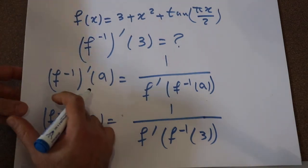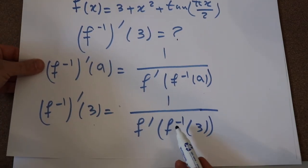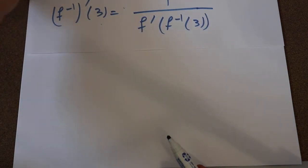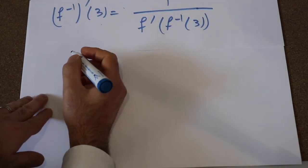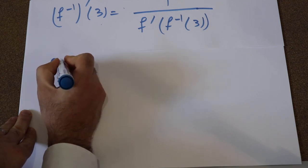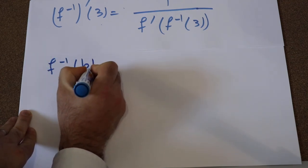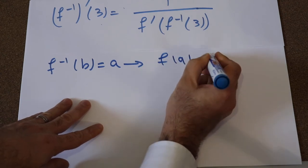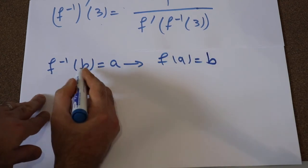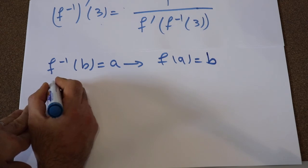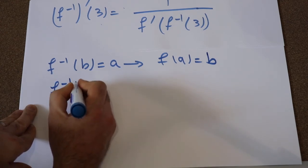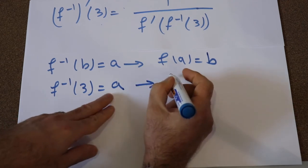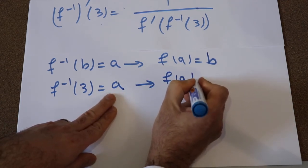So here what you need to do is calculate the inverse of this function at point A equal to 3. We know that if f⁻¹(b) equals a, then f(a) equals b. So here b is equal to 3, so let's assume f⁻¹(3) equals a, then we can conclude that f(a) equals 3.